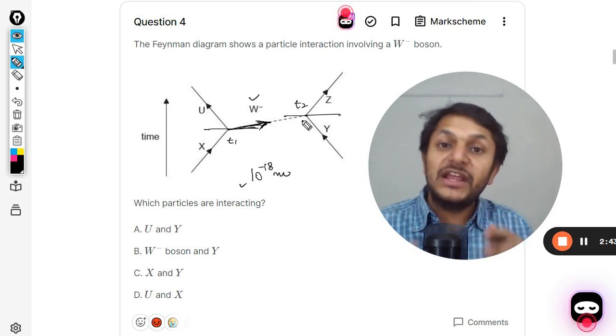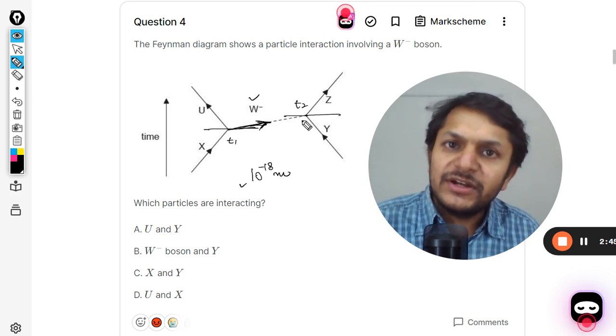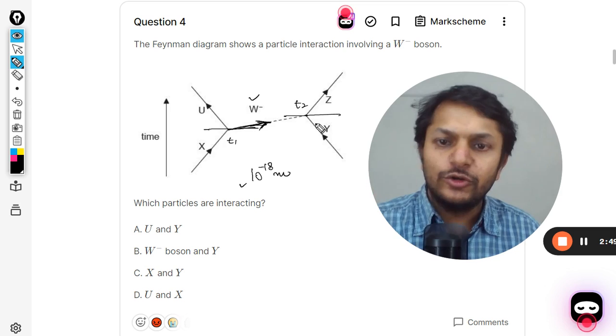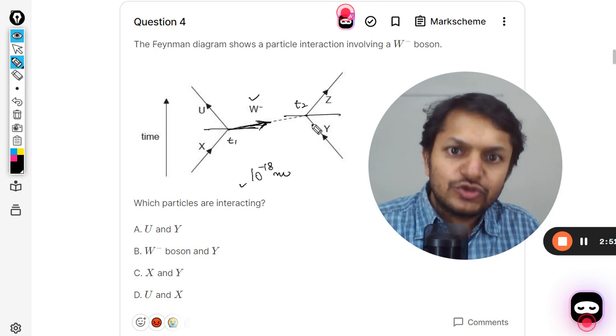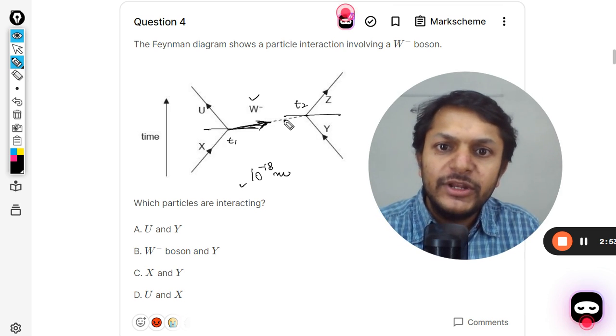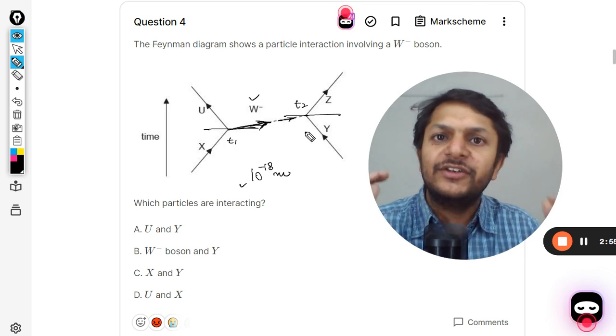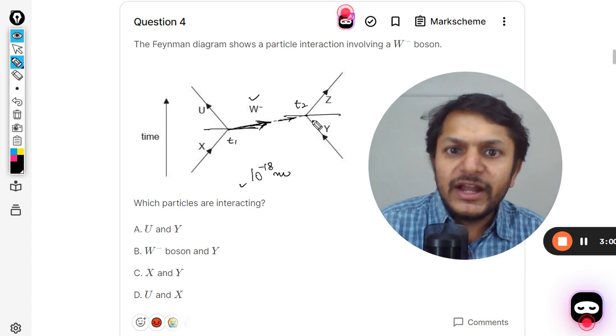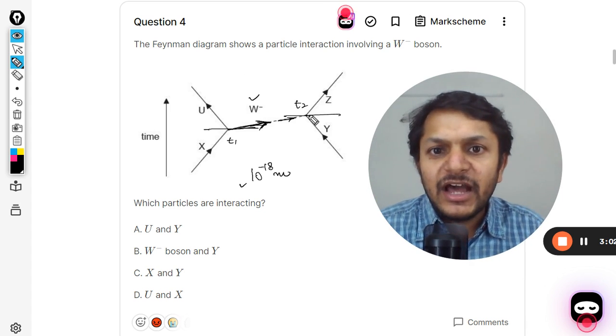So this W negative boson reaches here and by that time its life is over. It has to now separate itself into two particles. Actually, Y is also coming from the other side. So W negative boson and Y are interacting with each other, and Y particle is absorbing the W negative.